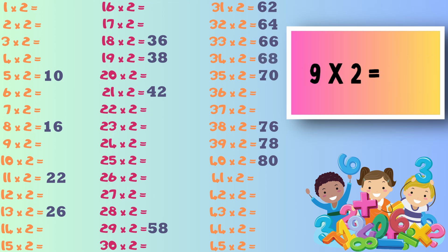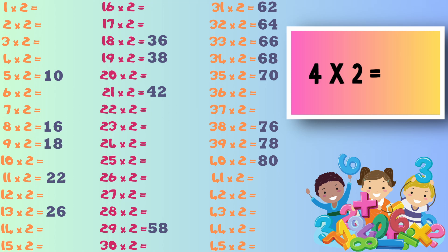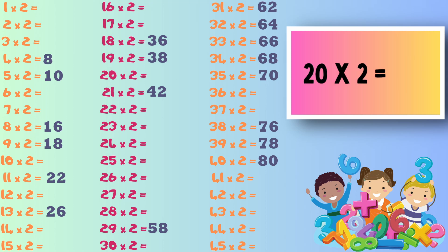Next up it's 9 times 2 and the answer to this is 18. Next up it's 4 times 2 and the answer is 8. Next up it's 20 times 2 and the answer to this one is 40.